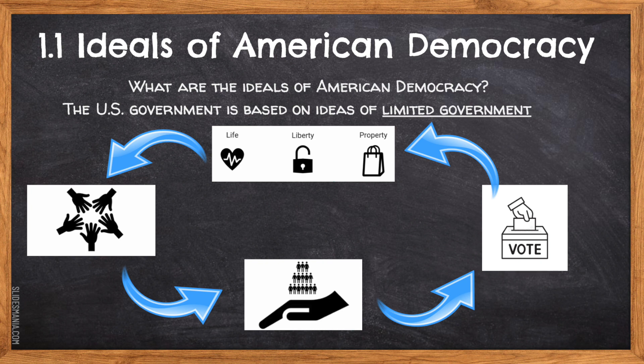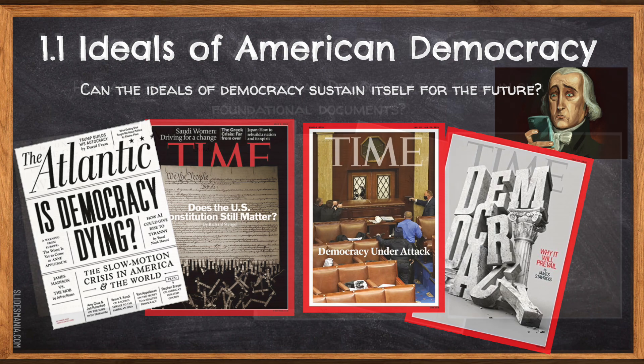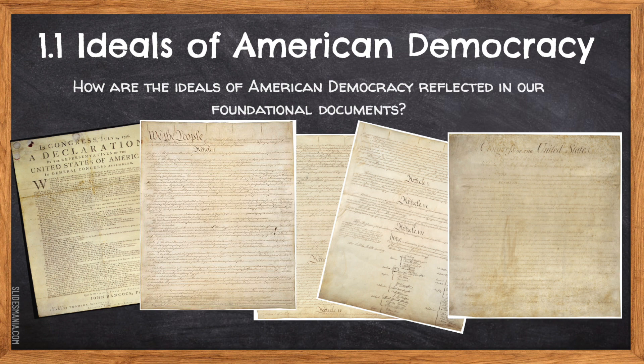And as we're about to see through our course, the ideas of natural rights, social contract, popular sovereignty, and republicanism have sustained the American experiment for more than 240 years. The question going forward is: will those ideals continue to sustain the American republic for future generations? So as we wrap up our introduction, one question we'll come back to through this unit is how are the ideals of American democracy reflected in our foundational documents — that is the Declaration of Independence, the Constitution, and the Bill of Rights.